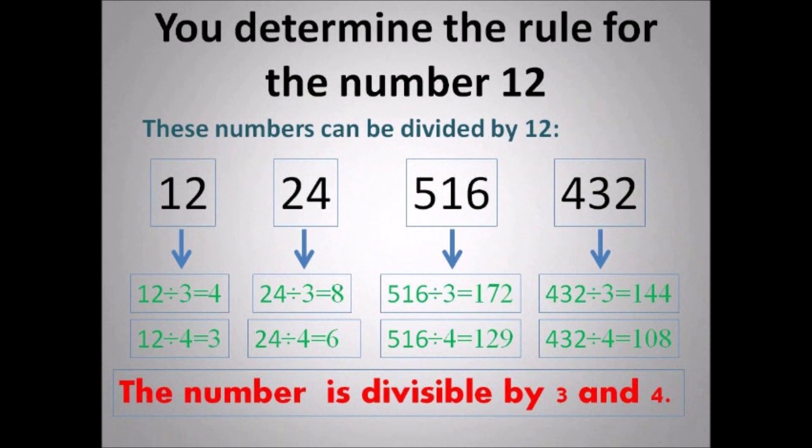Okay, you can determine the rule for the number 12. Number 12: the number is divisible by 3 and 4. Both 3 and 4 must be able to divide the number.